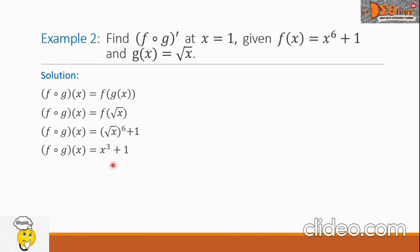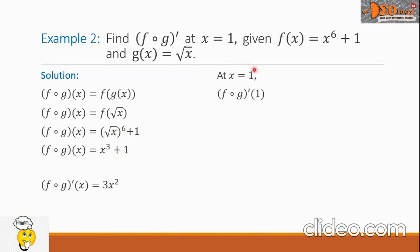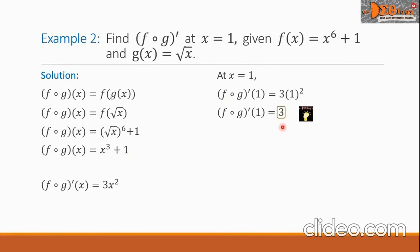We are now ready to take the derivative of x cubed plus 1. So f composite g prime of x equals 3x squared. At x equals 1, f composite g prime of 1 equals 3 times 1 squared, which equals 3. This is our final answer.